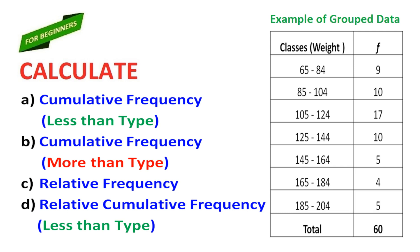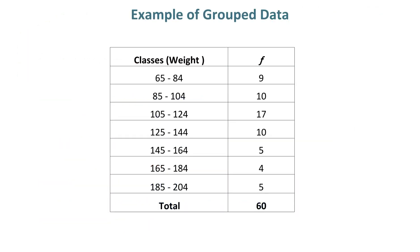How to find cumulative frequency and relative frequency in grouped data. In this example there are 7 classes and the sample size is 60. The frequency is given in front of each class.